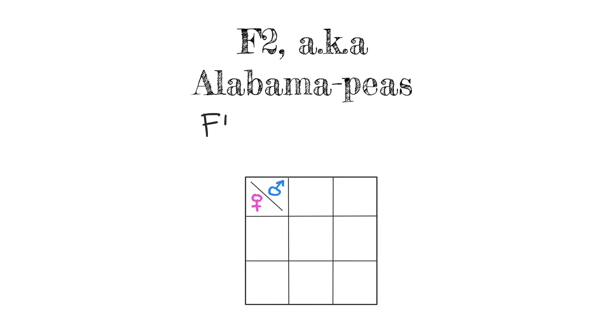He crossed F1 generation pea with another F1 generation pea. So they self-crossed and that resulted in F2 peas.